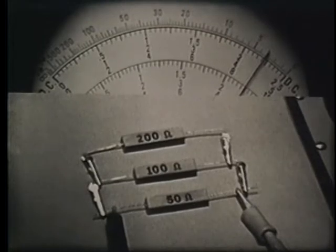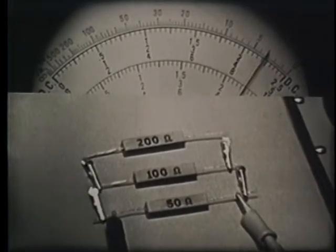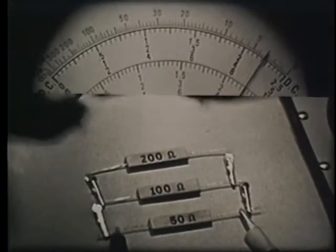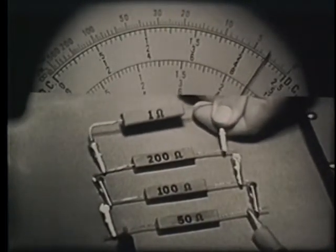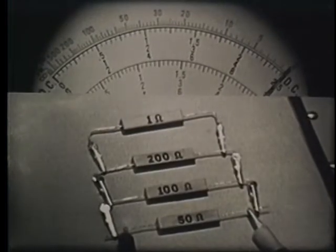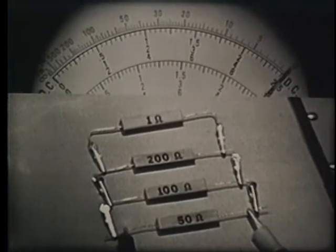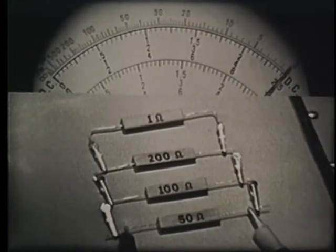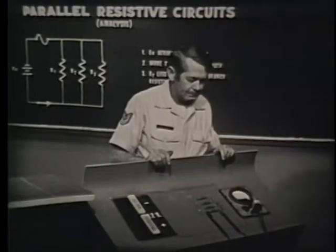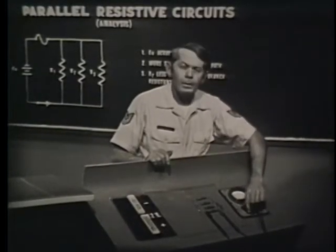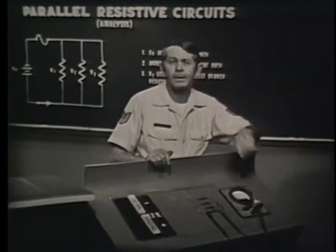To prove it further: a 1-ohm resistor connected in parallel with these three gives a total resistance of less than 1 ohm. We must conclude that the total resistance in a parallel circuit is always less than the smallest branch resistance. And that covers current, voltage, and resistance in a parallel circuit.